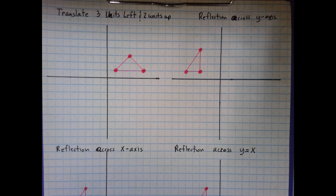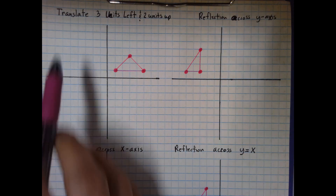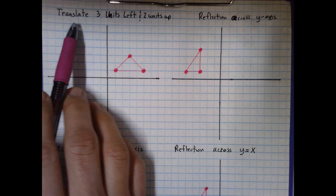In this video we're going to look at a couple different types of transformations. We're going to look at how to translate an object — which is to move it without changing its orientation — and then how to reflect it across the y-axis, the x-axis, and over the graph of y equals x.